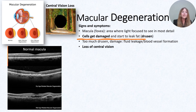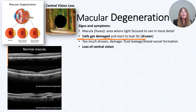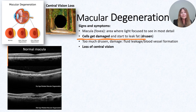In dry macular degeneration, the cells can get damaged and they start to leak drusen, which are lipids, and this destroys the architecture of the cells that we need to see right in the center of our eyes. If too much of that drusen leaks out of our cells, the retinal pigment epithelial cells can crack, and then fluid or blood can actually get trapped in the center of the eye. This is called wet macular degeneration, and this is where people lose central vision.